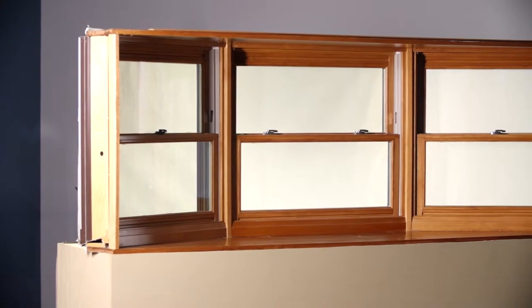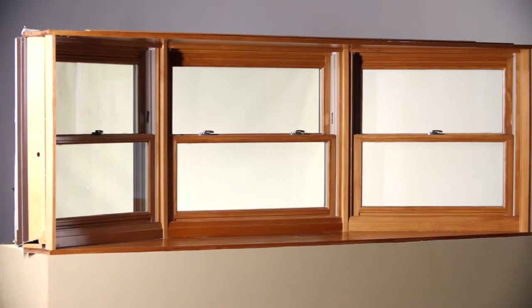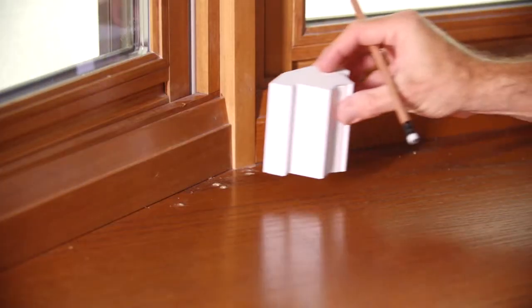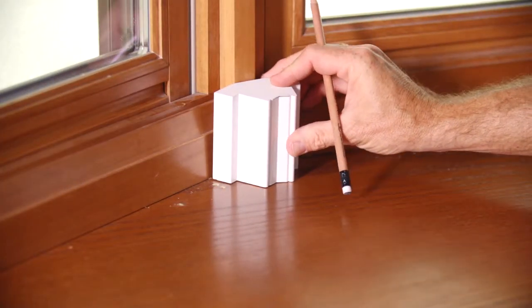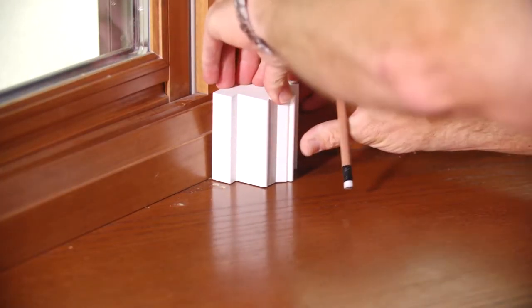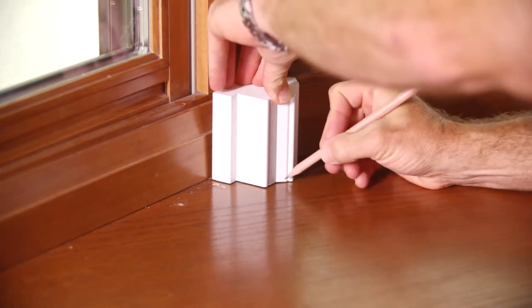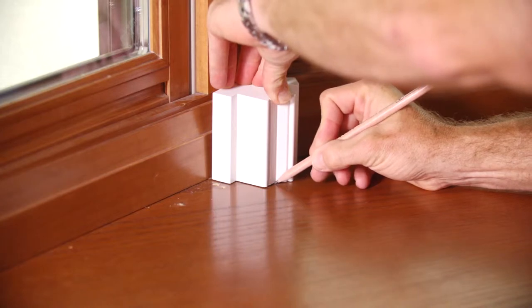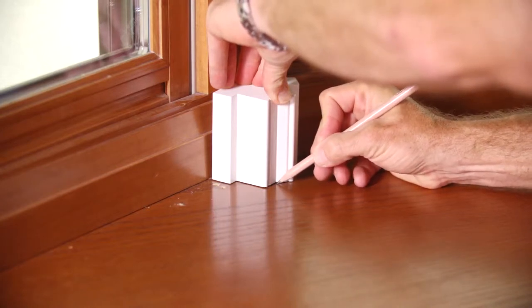In this video we will be discussing how to measure for a bay window application inside mount. As a best practice measuring technique, we recommend you take a bay post sample piece or a bay post template and place it on the window seat to help establish your measure reference points.